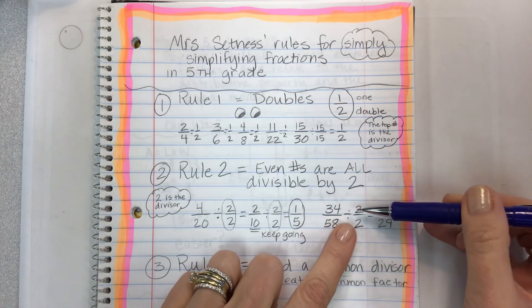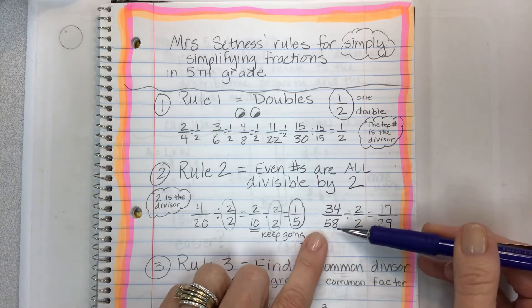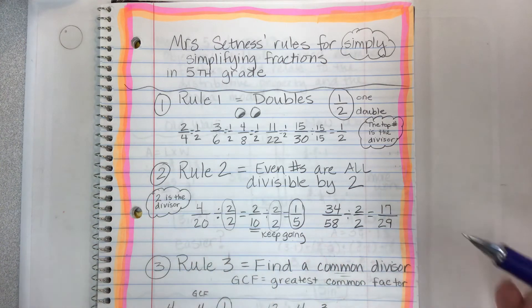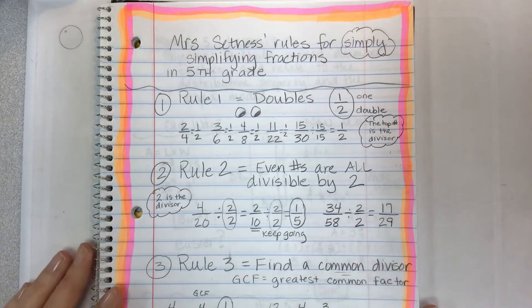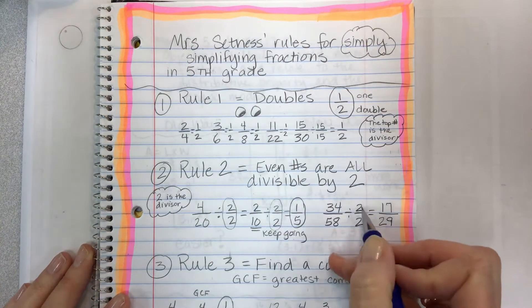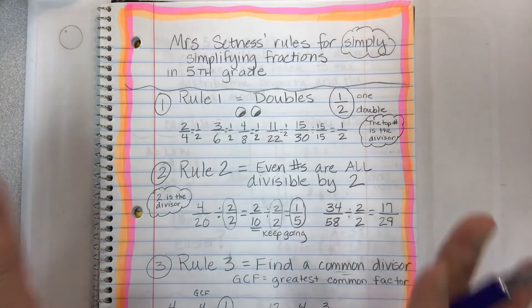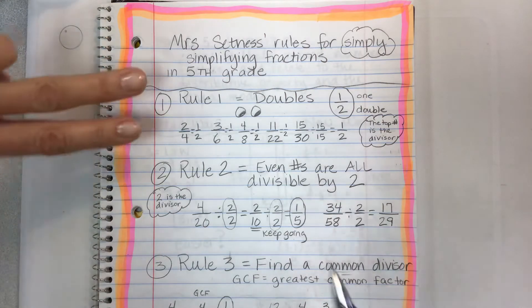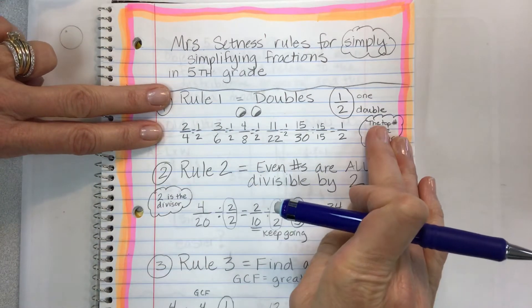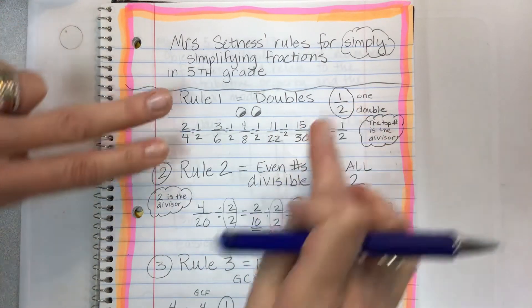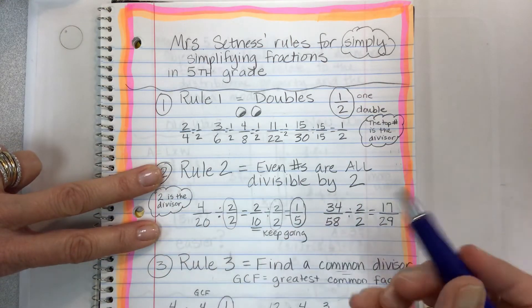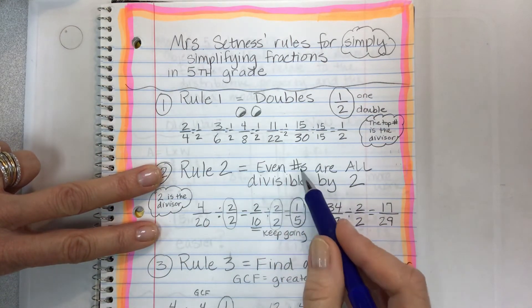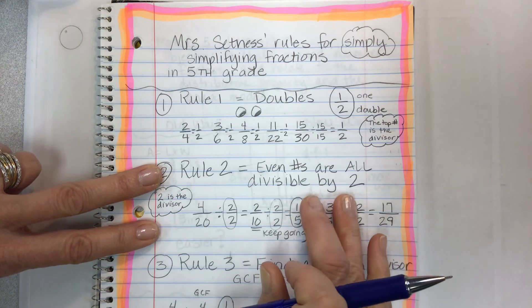So dividing 34 by two, you get 17. 58 by two, you get 29. You have these weird prime numbers and you know that's the simplest form. So sometimes you can simplify in one step. The patterns go in the early grades. You'll look for these things called doubles, they're all equal to a half. Look for fractions where the numbers are even and then just start dividing by two.